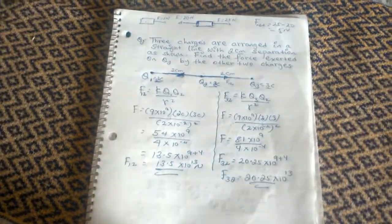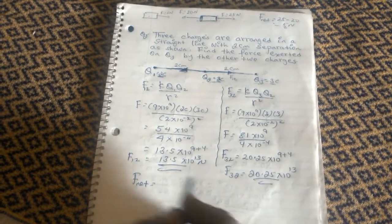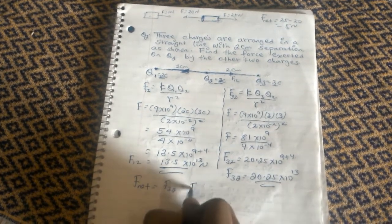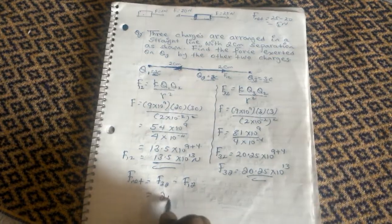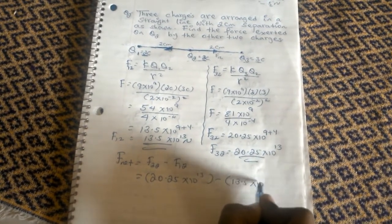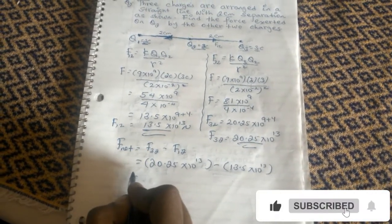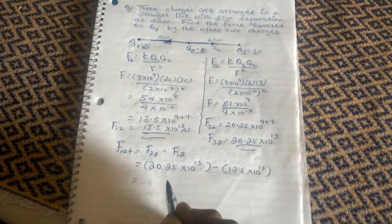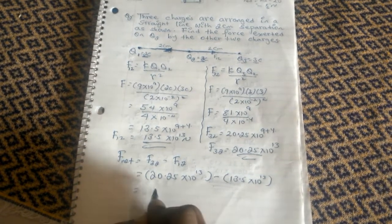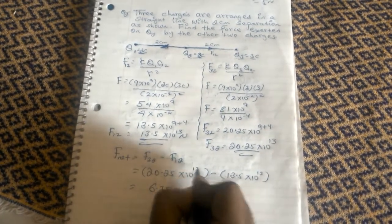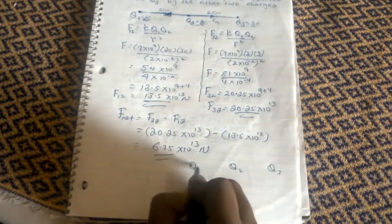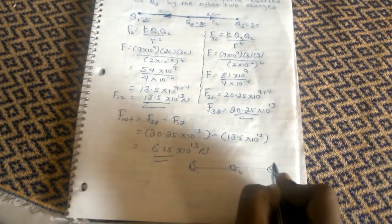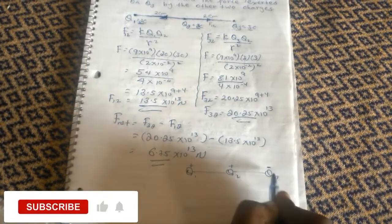The net force will be F32 minus F12. If Q1 is positive charge and Q3 is negative charge, and Q3 is negative, then Q1 and Q2 — looking at the signs — Q1 repels, and the opposite charge Q3 attracts Q2.